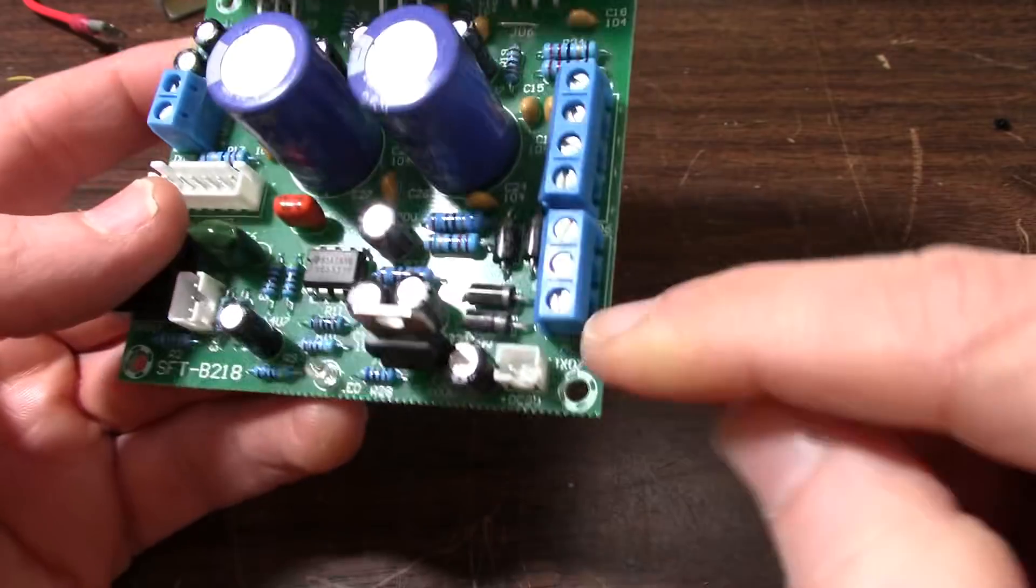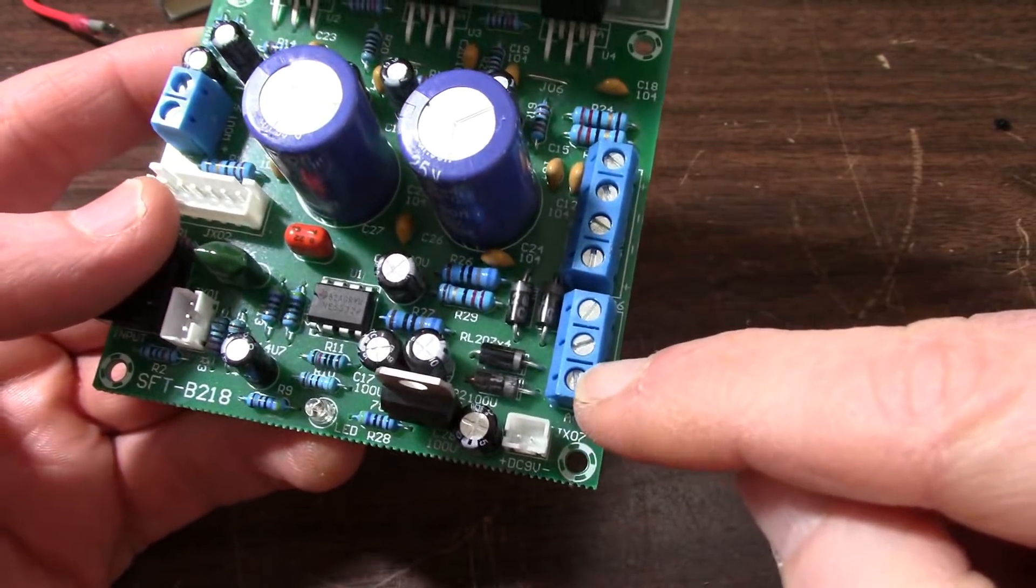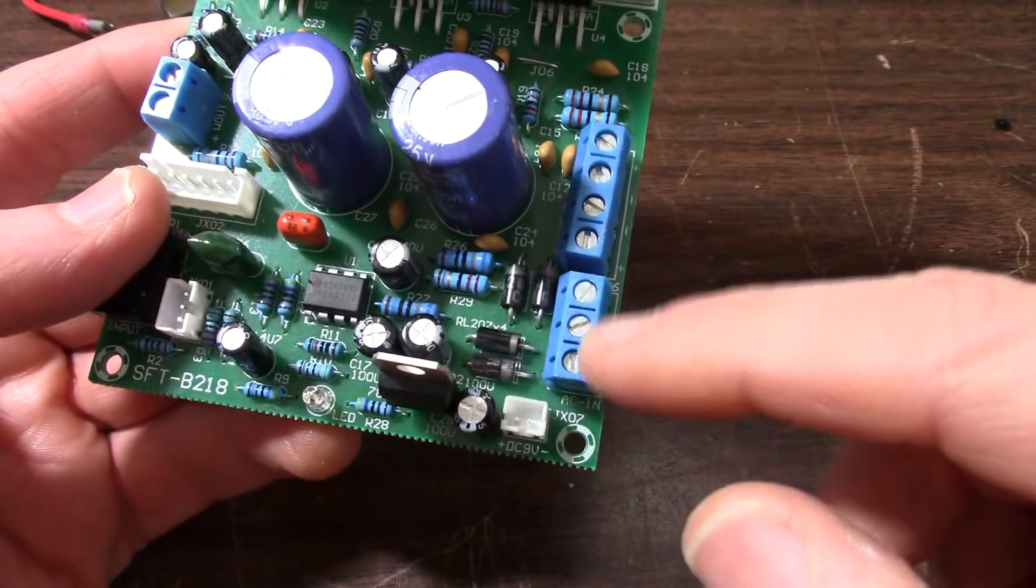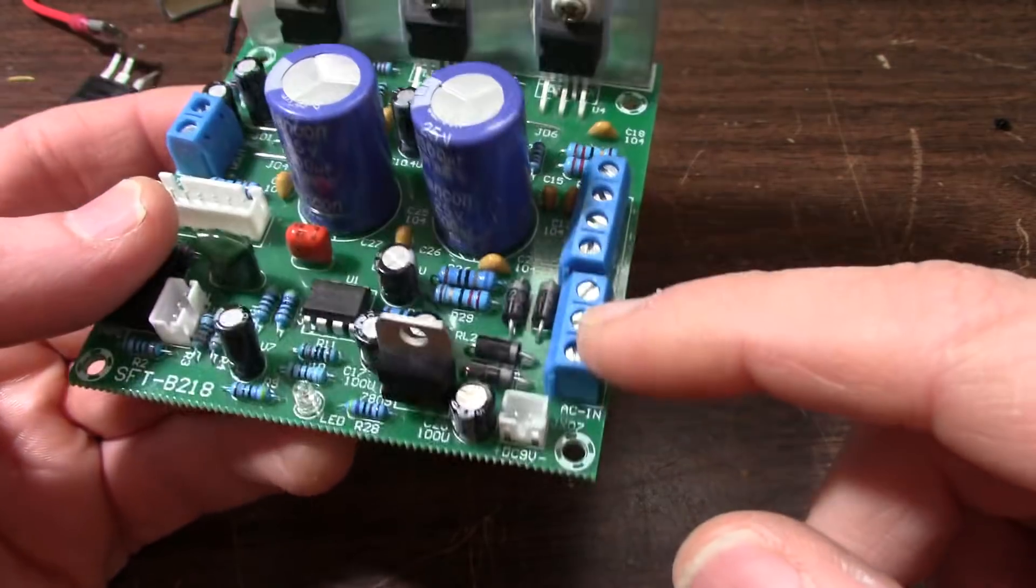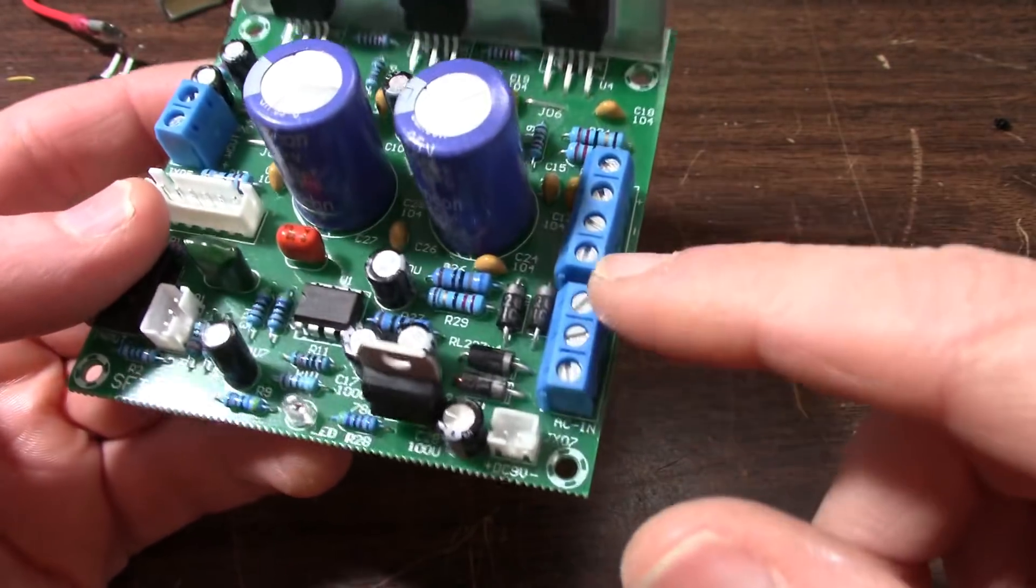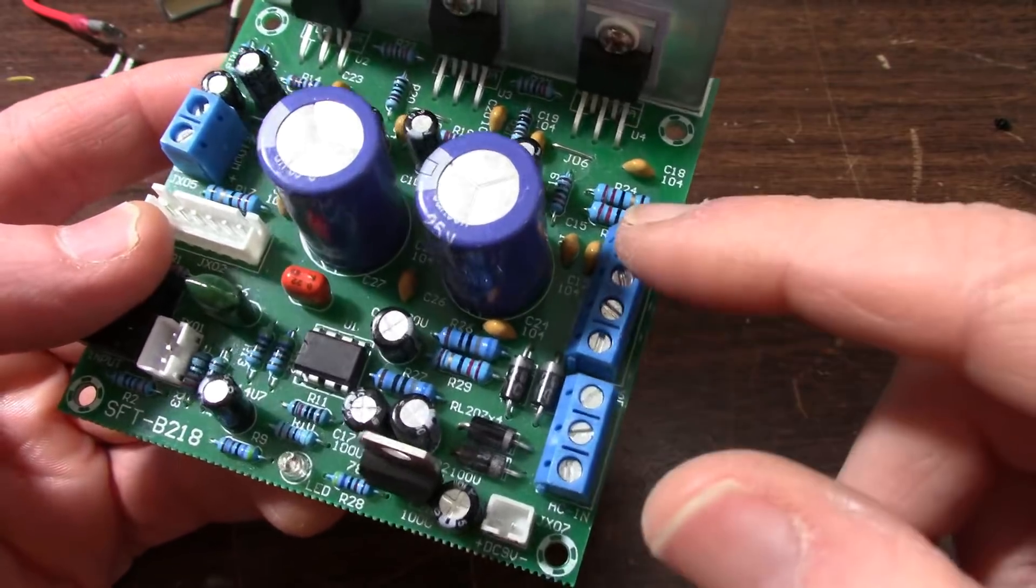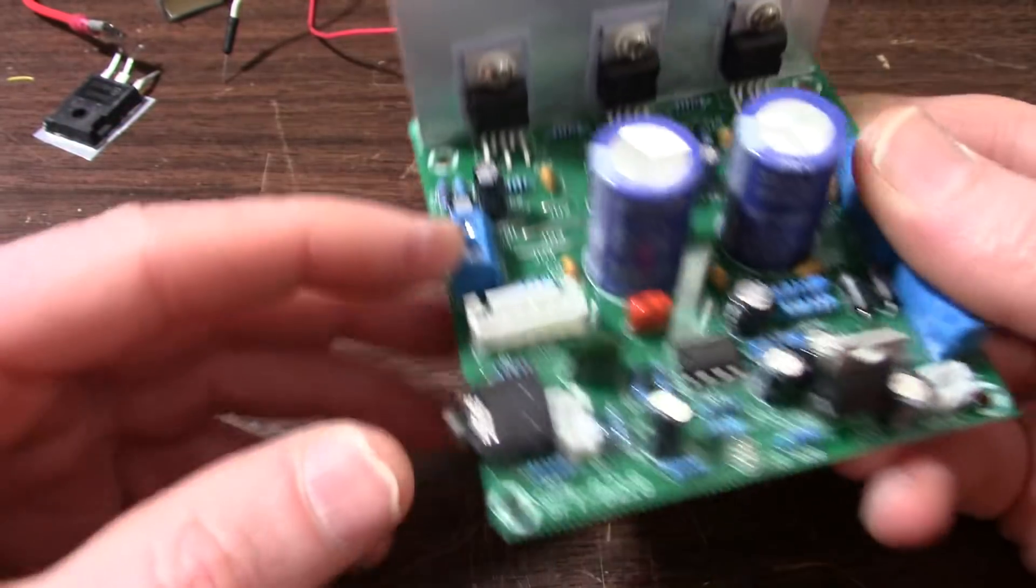Okay, so what do we have here? We have AC input, requires a center tap transformer 24 volts with a center tap, which is what I would recommend, left and right output and the subwoofer output.